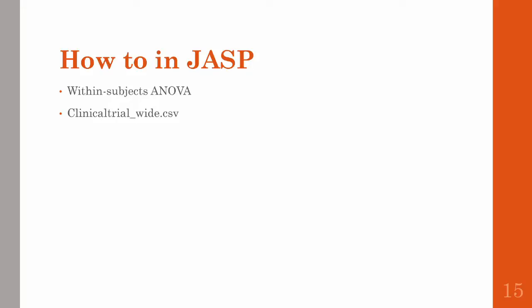Next we'll do a within-subjects ANOVA or repeated-measures ANOVA. We'll use the same dataset and we'll kind of pretend it's repeated-measures now, using the clinicaltrial wide CSV file associated with this module. Kind of like the difference between paired t-test and independent samples t-test, it's better to have the data formatted differently — thrown across rows rather than stacked in one single column. So go ahead and download that Y dataset.